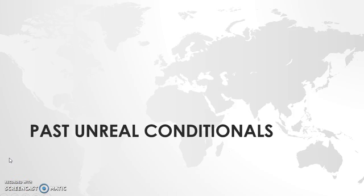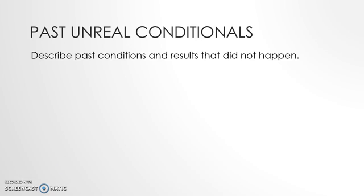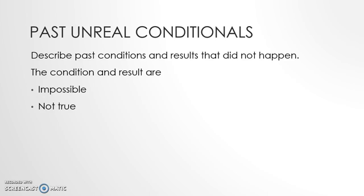In this short lecture we'll be discussing past unreal conditionals. Past unreal conditionals are the last type of conditional sentence. They describe past conditions and results that did not happen. Both the condition and result are impossible, not true, or imaginary. In other words, when we write past unreal conditional sentences, we're talking about things that never actually happened.